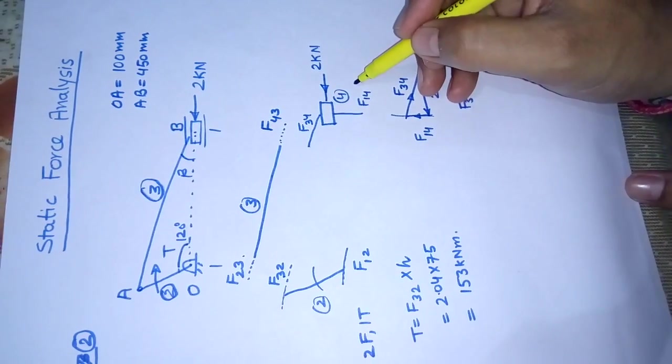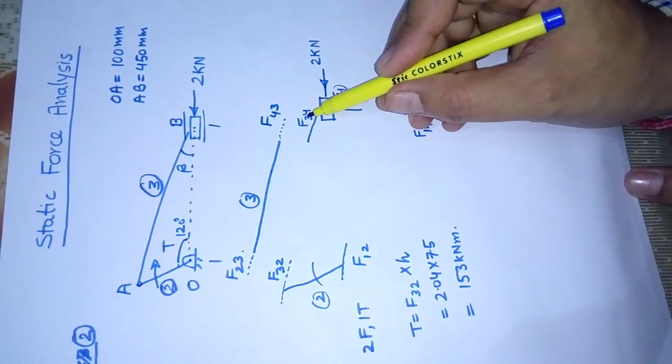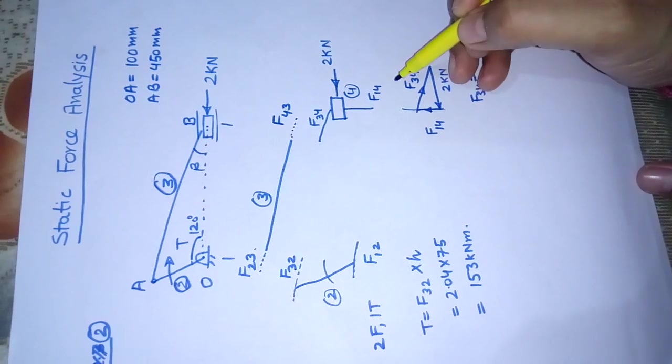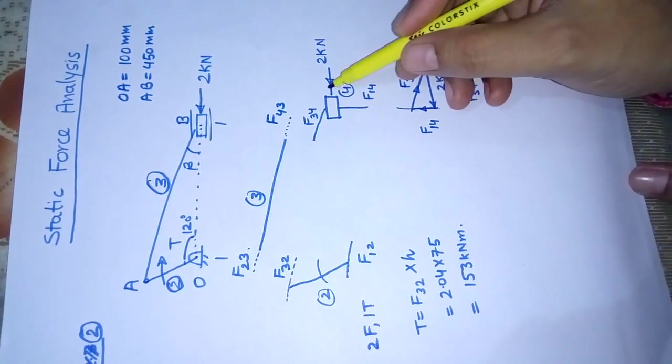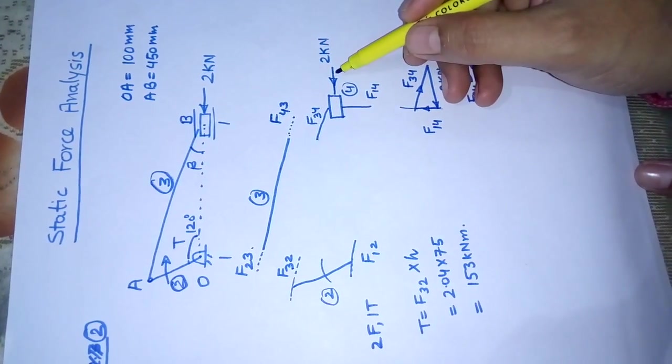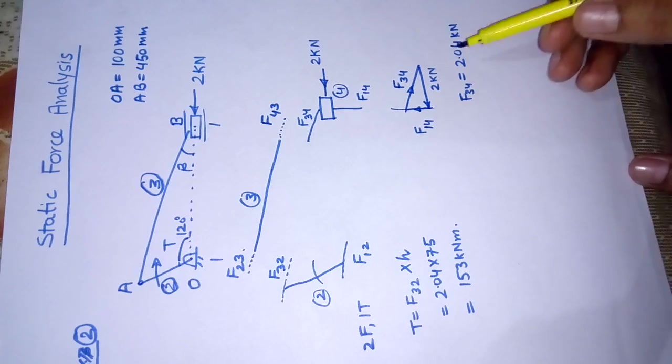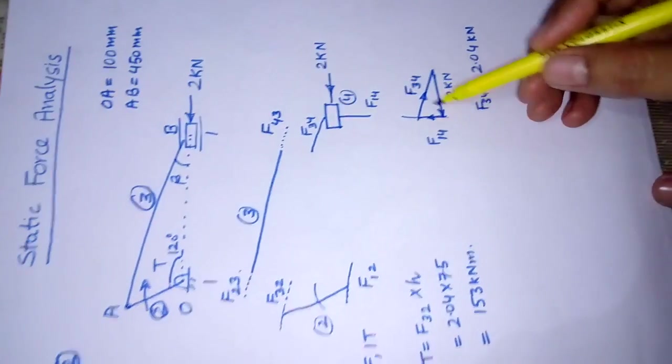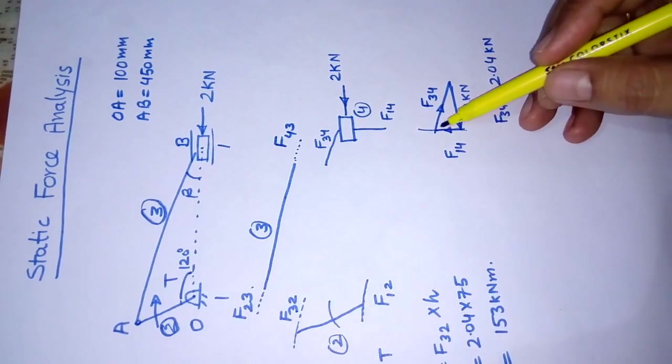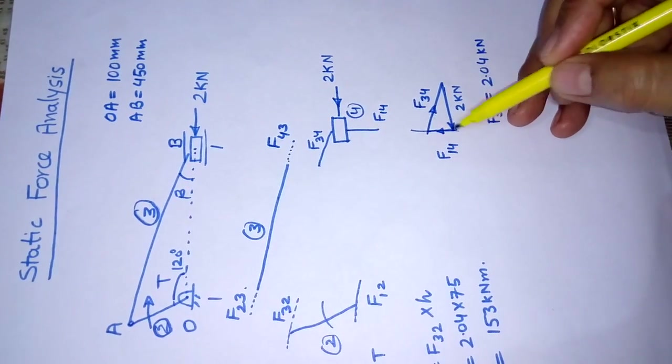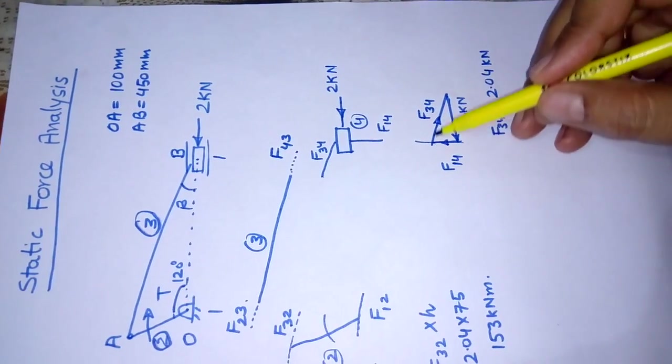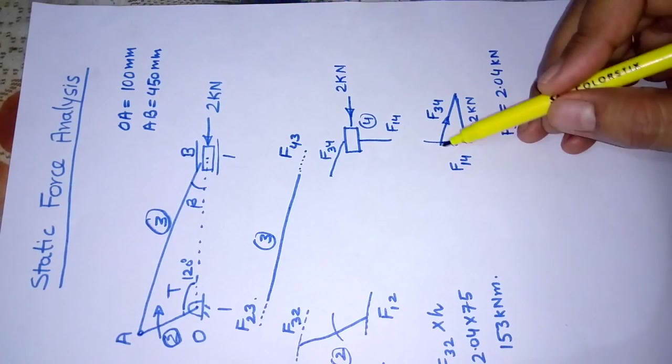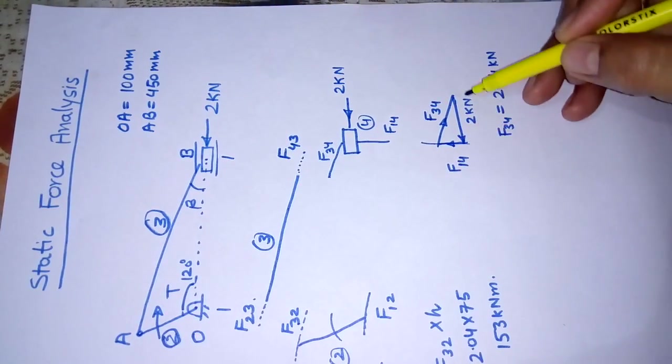To know the directions of the arrowheads of F34 and F14, we will make a vector triangle because it is a three-force concurrent force system. We draw first the known force in the known direction, then draw an arrowhead, then another line, and get a closed triangle.